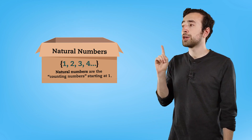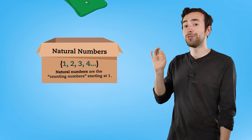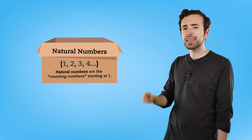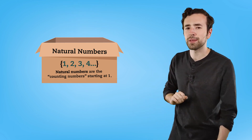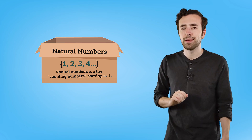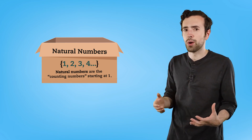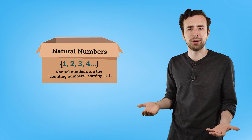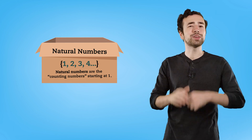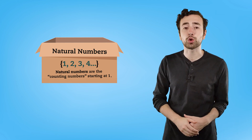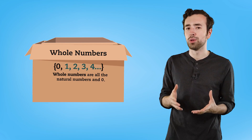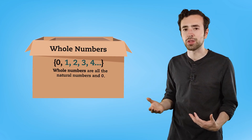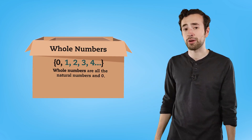One, two, three, four, and so on. Notice that I didn't include zero in that list. That's because if there are zero of something, then I can't count it at all. Instead, zero belongs in a group called the whole numbers.